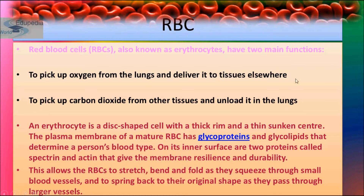RBC has two main functions: to pick up oxygen from the lungs and deliver it to tissues, and to pick up carbon dioxide from tissues and unload it in the lungs. An erythrocyte is a disc-shaped cell with a thick rim and a thin sunken center. The plasma membrane of mature RBCs has glycoproteins and glycolipids that determine a person's blood type. On its inner surface, two proteins — spectrin and actin — give the membrane resilience and durability, allowing RBCs to stretch, bend, and fold as they squeeze through small blood vessels.